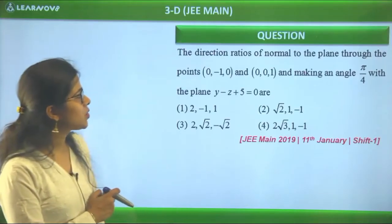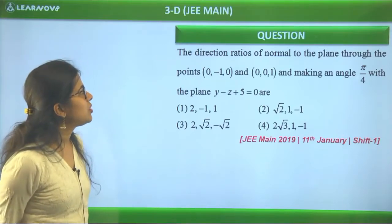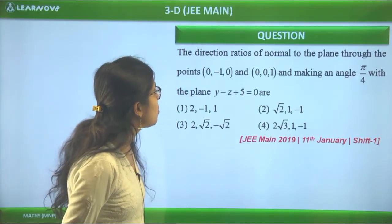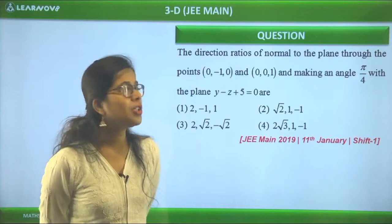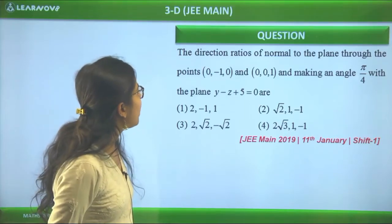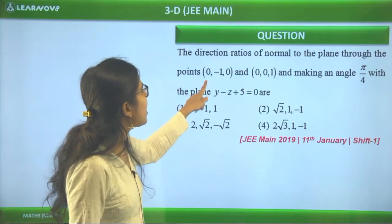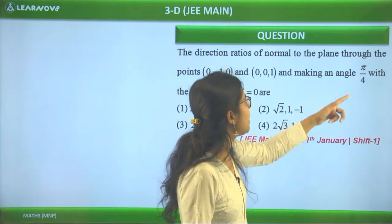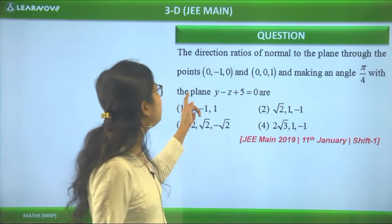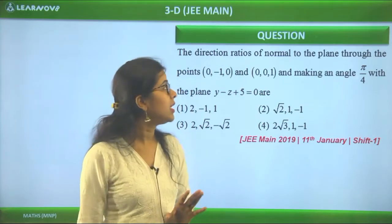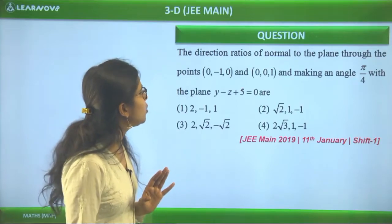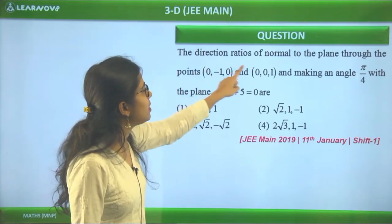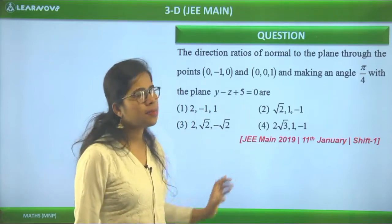Next question, also from 11th January Shift 1: Find the direction ratios of the normal to a plane that passes through the points (0, -1, 0) and (0, 0, 1), and makes an angle of π/4 with the plane y - z = 0. We need to find the normal's direction ratios A, B, C.